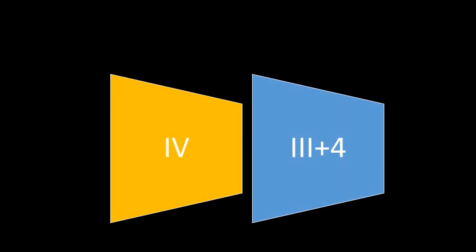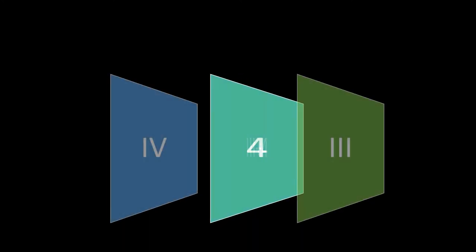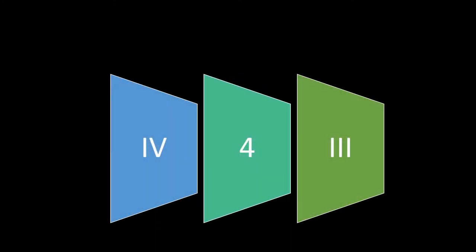In the Tweed method, all deciduous molars are extracted around eight years of age. One year later, the permanent first premolar is extracted along with the deciduous canines. In the next method, the extraction of the deciduous first molars is followed by the extraction of their predecessors, and finally the deciduous canines are extracted.